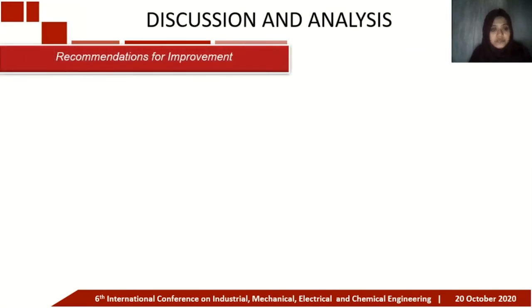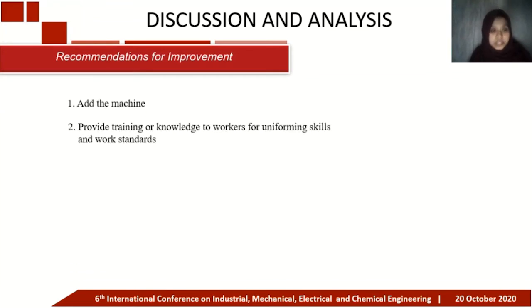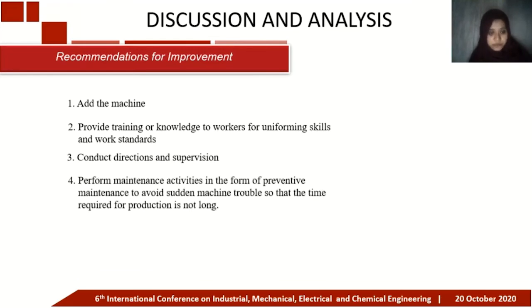Recommendations for improvement are given based on the four largest RPN values from the FMEA analysis. The proposed improvements include: providing training and knowledge to workers for uniform skill and work standards, conducting direction and supervision, and performing preventive maintenance activities to avoid sudden machine trouble so that production time is not prolonged.